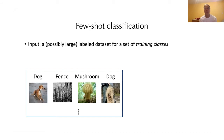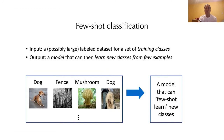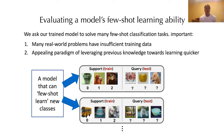In few-shot classification, we have a large labeled dataset for a set of training classes — lots of examples of dogs, mushrooms, and fences. But what we want is a model that can learn new classes from few examples. It's not that we're going to test it on dogs and fences and mushrooms, but on wholly new classes. We call that few-shot learning — it's going to learn with just a few examples of these new classes. This is important in the real world because lots of real-world problems have insufficient training data. We may have lots of training data offline, but we don't know what that model should be used for at test time. We want a model that can adapt and leverage previous knowledge, not to do well on new examples from the same classes, but to learn new classes quicker.